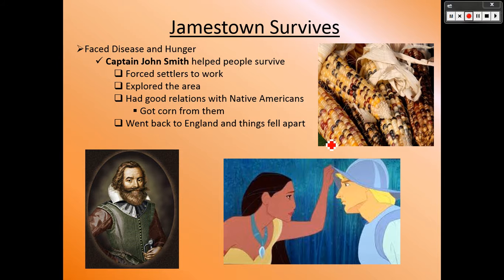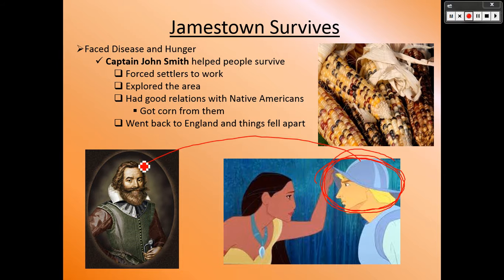Now we get to how Jamestown was actually able to survive. The image you might know is the Disney version of John Smith, but the real John Smith is different — yes, Pocahontas was real, but the John Smith-Pocahontas story was largely made up by Disney. One of the major factors of surviving the new world was disease and hunger.